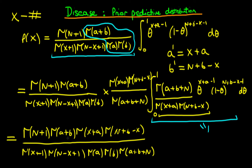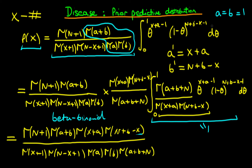And this is now what is known as a beta-binomial distribution. Notice that all theta dependence is gone — we're just left with the only variable being x, which is what we require. We're looking for the marginal probability in terms of x.